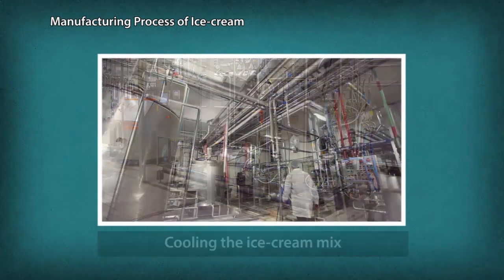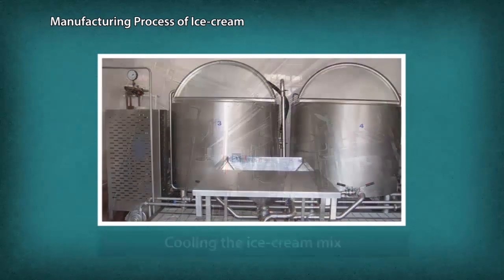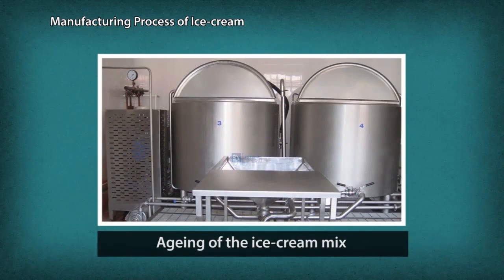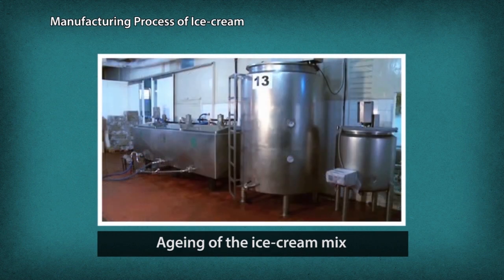The pre-mix then passes through heat exchangers for cooling and is chilled to 2 degrees centigrade and left to thicken, becoming the base mixture. This mixture is then aged in insulated storage tanks for at least 6 to 8 hours at 4 to 6 degrees centigrade.